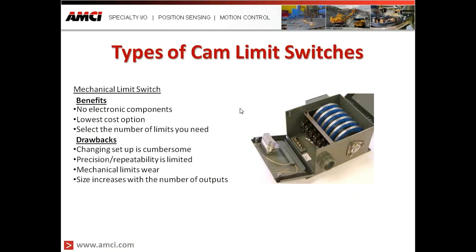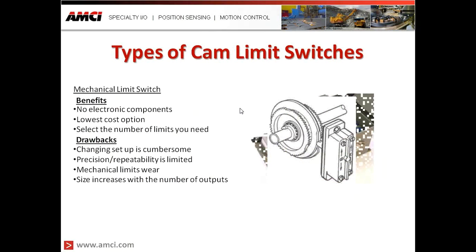The first type is a mechanical limit switch. The benefits are that there are no electronic components, making them very simple to use and a low-cost option. With a mechanical limit switch you select the number of limits you need — if you only need five, you order five; if you need twelve, you order twelve. As you can see in the picture, it's a simple concept: a wheel with a lobe that turns a switch on and off based upon the rotating shaft.